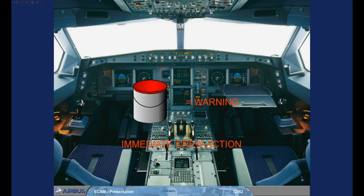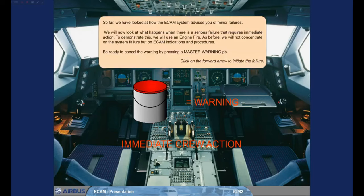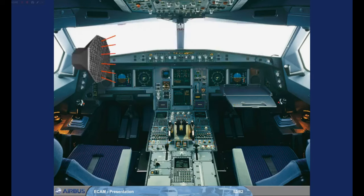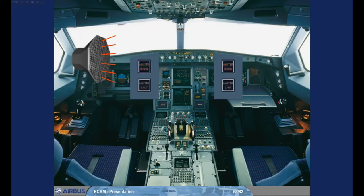Be ready to cancel the warning by pressing a master warning push button. Click on the forward arrow to initiate the failure. When the fault occurs, the ECAM system alerts the crew orally and visually. You hear a continuous, repetitive chime and see the master warning lights flashing. Press one of the master warning push buttons to cancel the master warning lights, stop the chimes, and reset the alerting system.